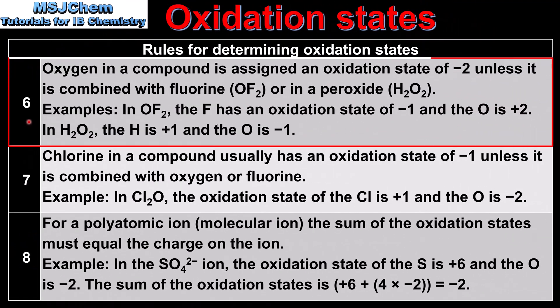Rule 6 concerns oxygen. Oxygen in a compound is assigned an oxidation state of minus 2, unless it is combined with fluorine or in a peroxide. In OF2, F is minus 1 and O is plus 2. In H2O2, a peroxide, H is plus 1 and O is minus 1. So oxygen is usually minus 2, except when combined with certain elements or in a peroxide.